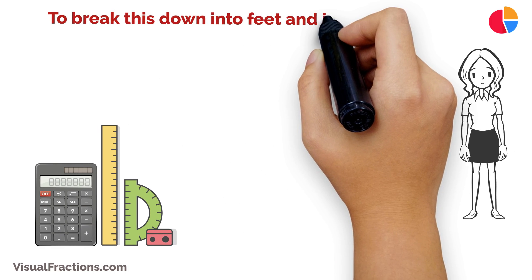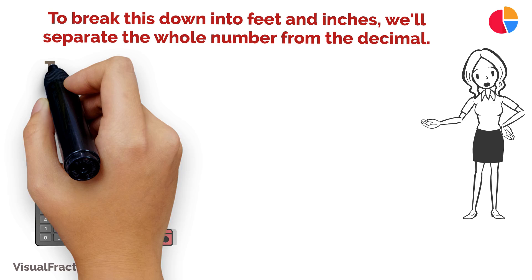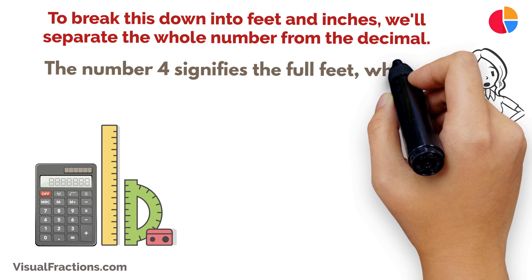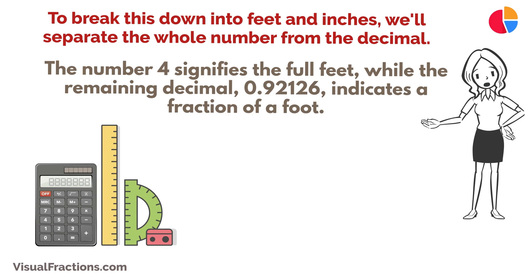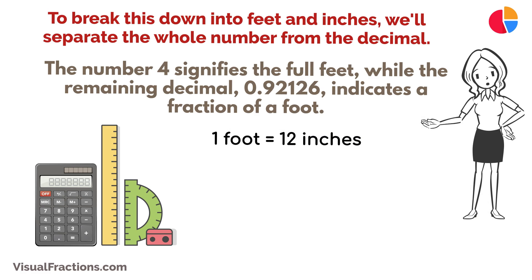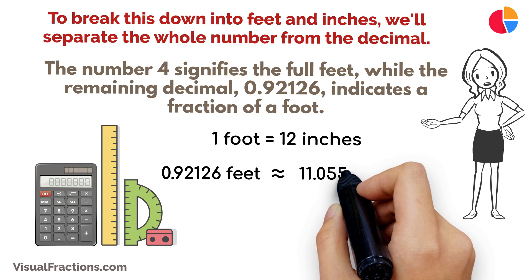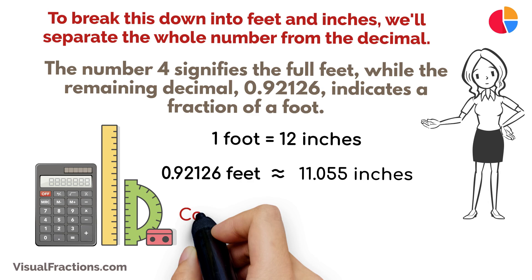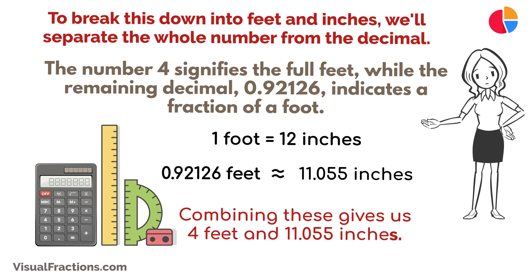To break this down into feet and inches, we'll separate the whole number from the decimal. The number 4 signifies the full feet, while the remaining decimal, 0.92126, indicates a fraction of a foot. Since one foot contains 12 inches, we'll convert the fractional part into inches by multiplying it by 12. Thus, 0.92126 feet is approximately 11.055 inches. Combining these gives us 4 feet and 11.055 inches.